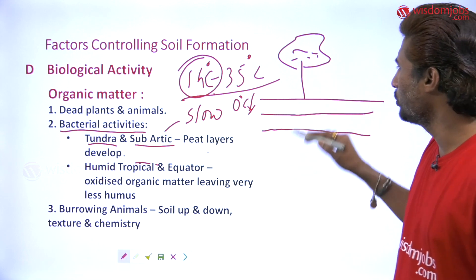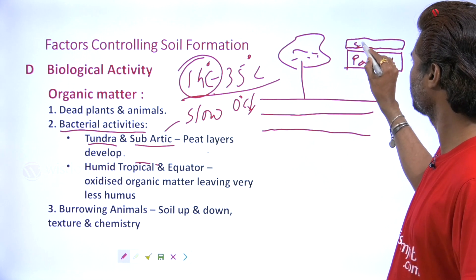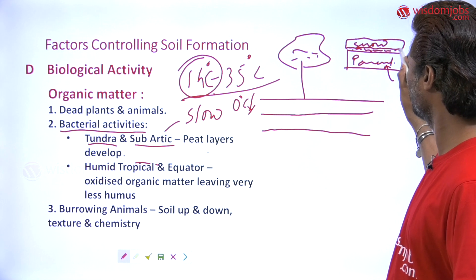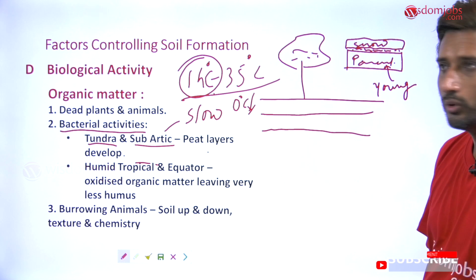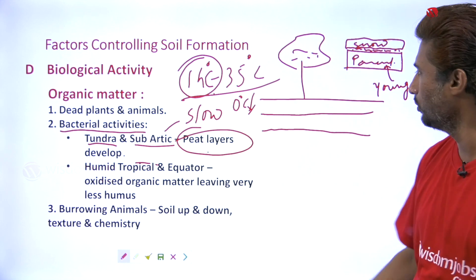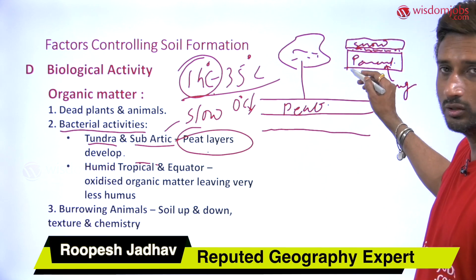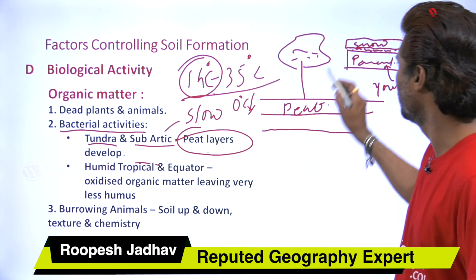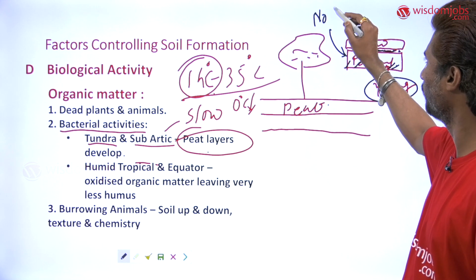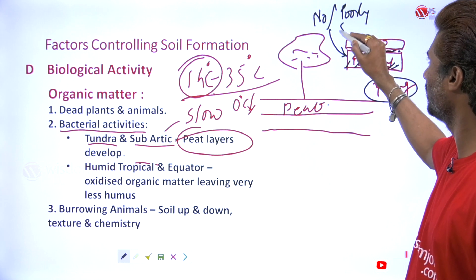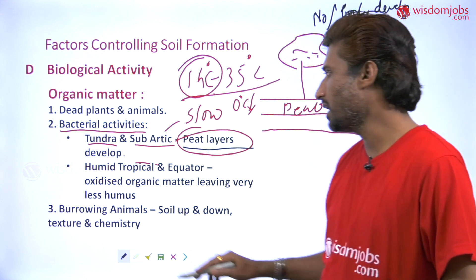In the tundra region, the condition is like this: parent rock material with snow over it. There are very few chances of soil forming as bacterial activity is very low, so the soil becomes young soil. In the sub-arctic region, peat layers develop instead of a proper soil profile. So in tundra or arctic regions there is no soil profile, or a poorly developed soil profile, and peat layers form.